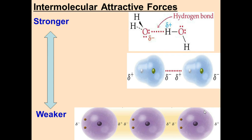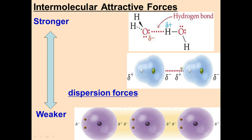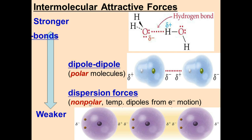Now let's rank the IMAFs from weakest to strongest. Dispersion forces are caused by temporary dipoles and are the weakest — electrons are always moving so the dipole is fleeting. Dipole-dipole forces are caused by polar molecules with permanent partial charges — somewhat stronger than dispersion. Hydrogen bonds are the strongest IMAF — hydrogen bonded to N, O, or F forms a very strong attraction to NOF atoms on nearby molecules. Remember: hydrogen must be bonded to one of those three elements.